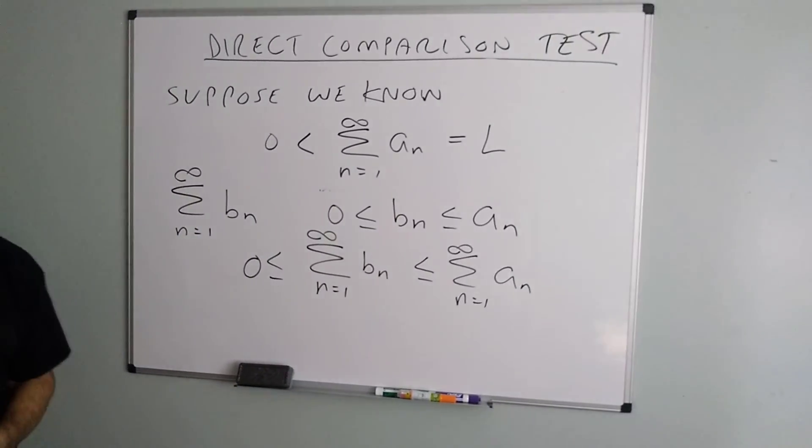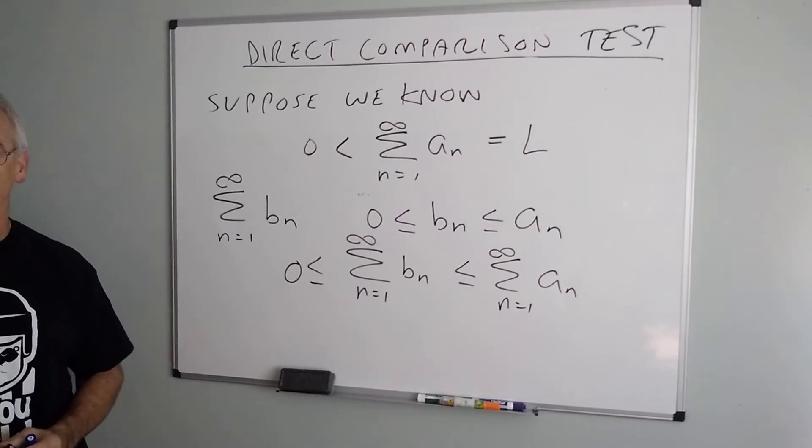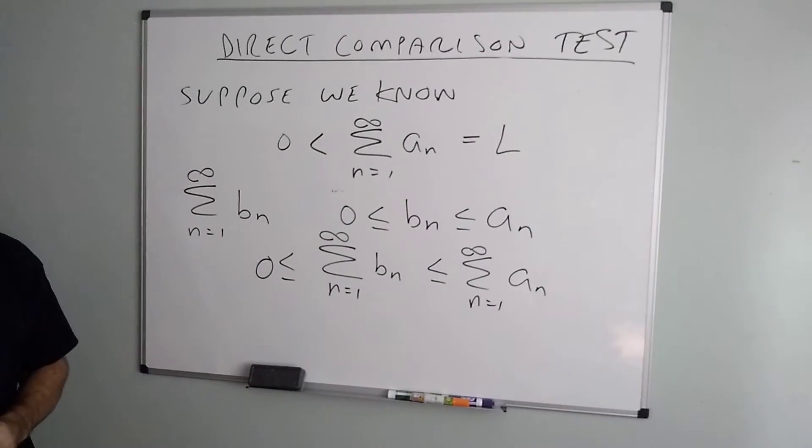So it would be like saying last year I made a finite amount of money. You made less than me but it was still a positive amount of money. Then we can conclude that you made a finite amount of money.